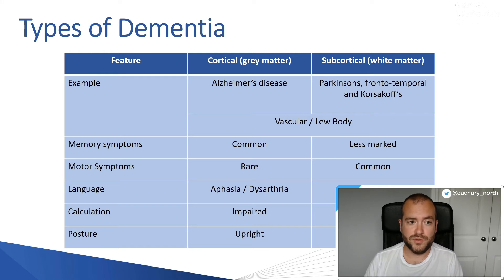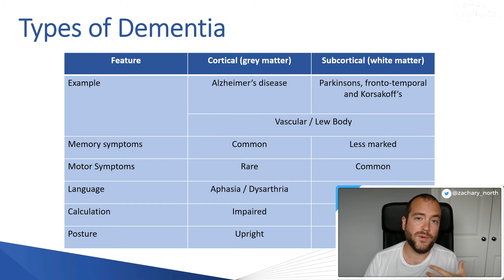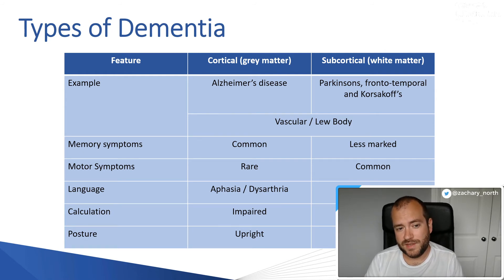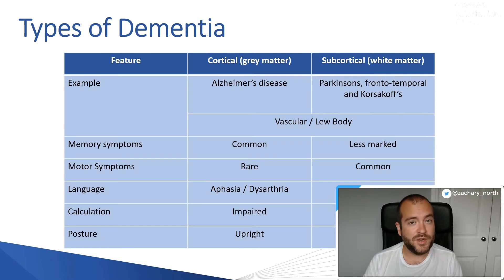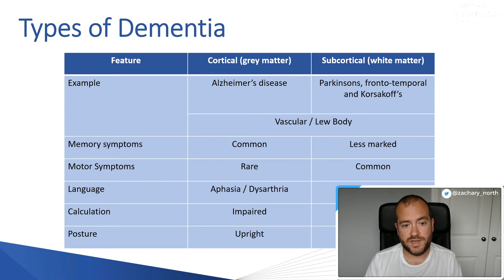Looking at the table, within the cortical column, memory symptoms are very common but motor symptoms are less common. Language is normally aphasic or dysarthric — aphasia relates to comprehension of language, while dysarthria relates to problems speaking. Generally with cortical dementias, calculation is impaired, and in testing we ask patients to do basic arithmetic or calculate months of the year to assess this — it gives a strong indication of cortical dementia.